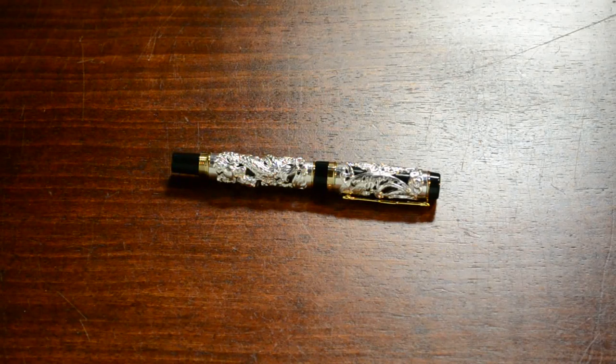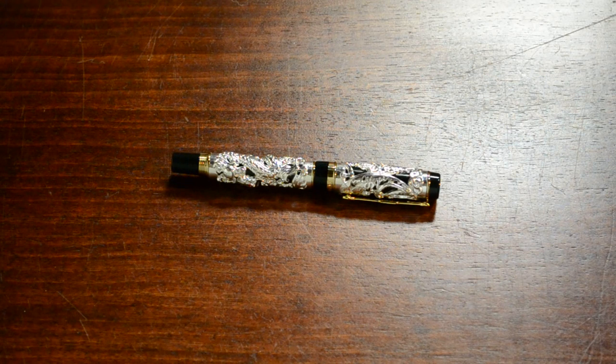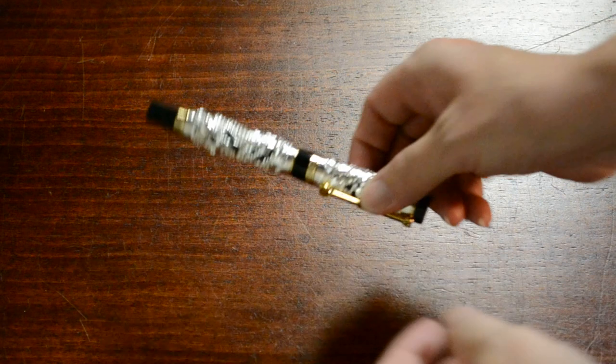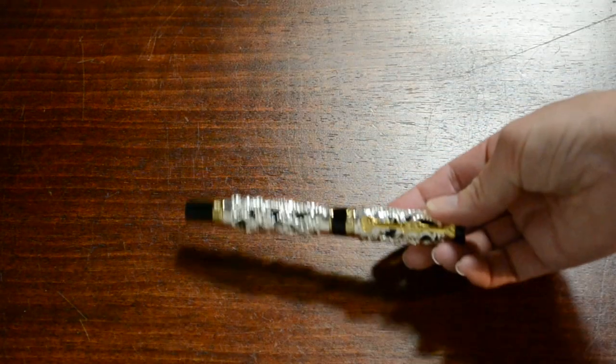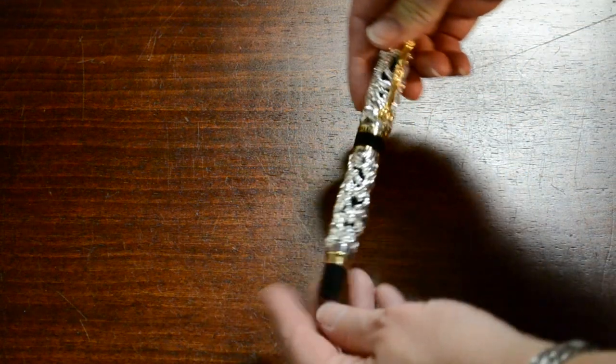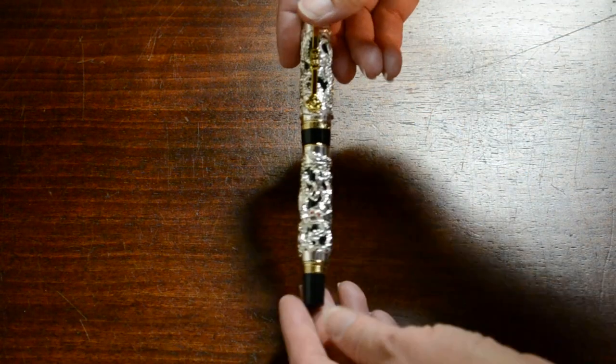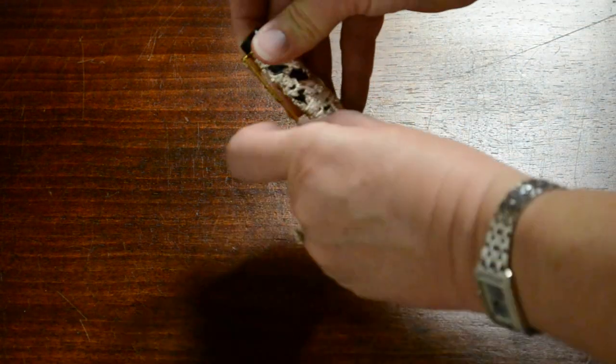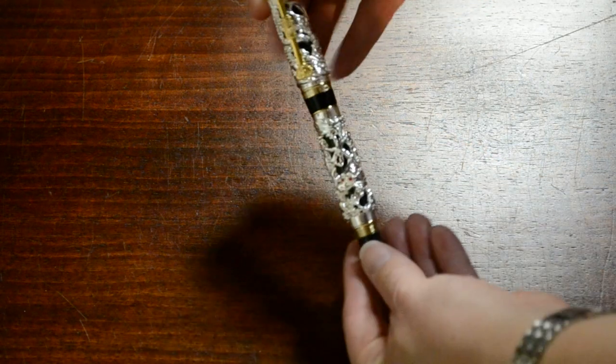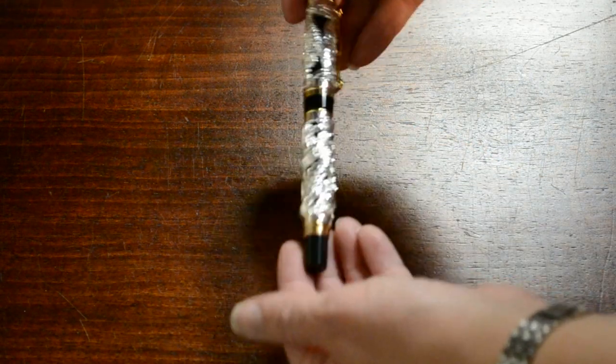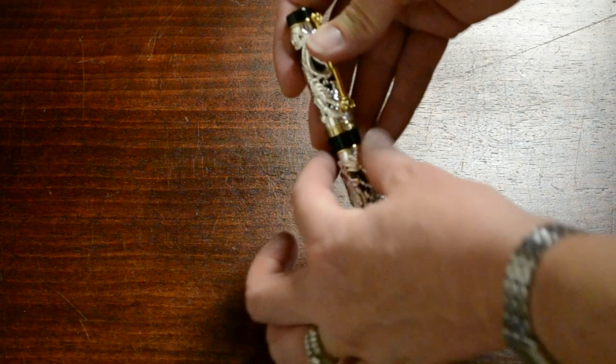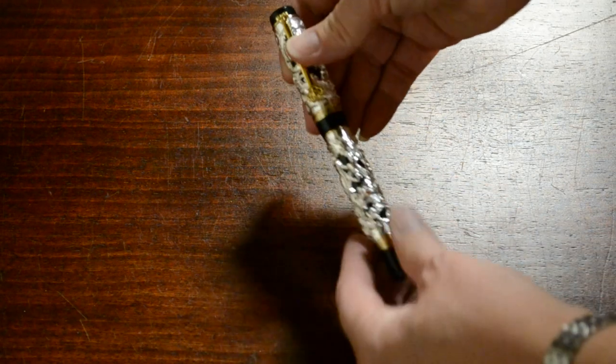Today we're looking at the Jin Hao Chinese Dragon fountain pen. The first thing you'll notice about this fountain pen is it is ridiculously decorated. If you take a look at it, it's obviously got a dragon on the pen. There's a dragon with two red eyes. If you spin it around, there's a somewhat functional pen clip there, but it's extremely heavy. That's the first thing you'll see. This is all metal covering a resin body.